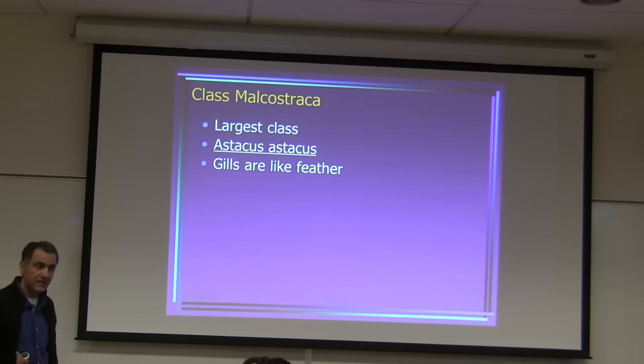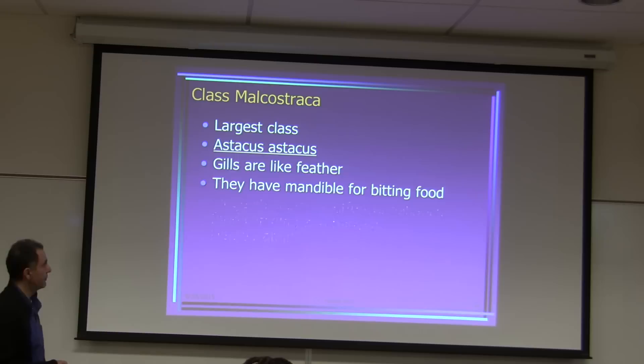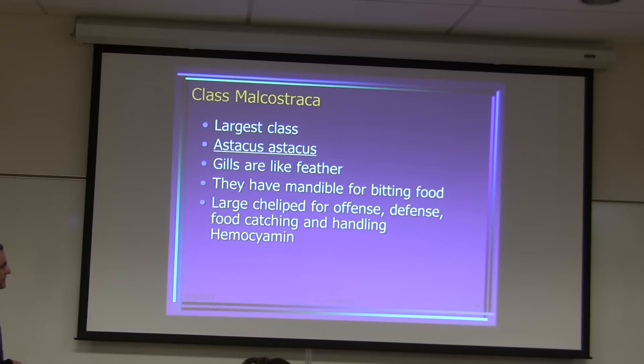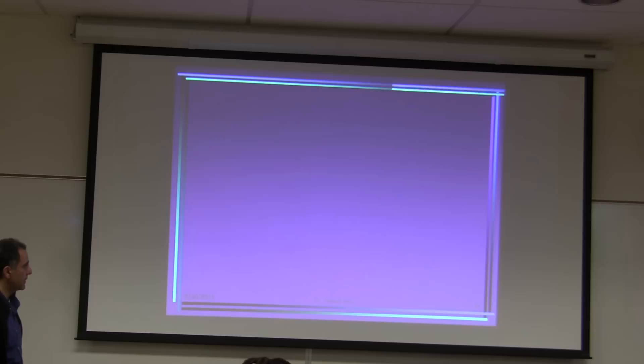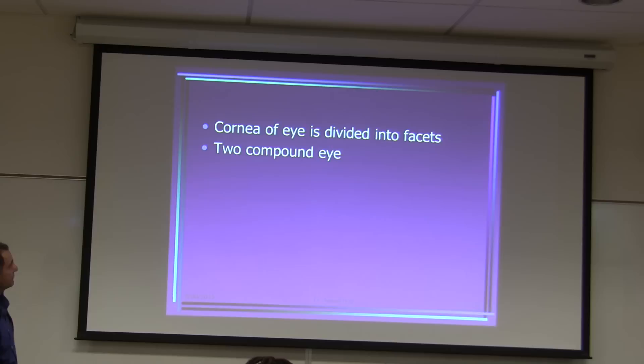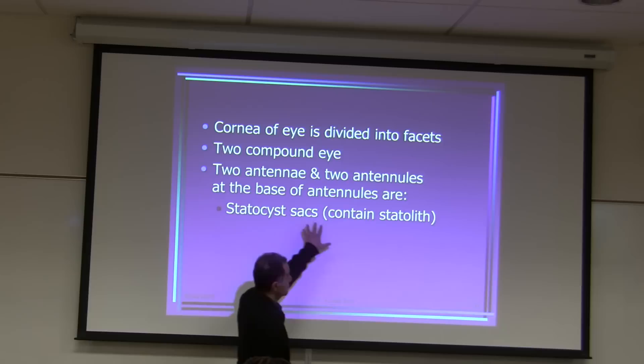The gills are feather-like; after you remove the carapace, you find feather-like structures underneath — those are the gills. They have mandibles for food, and a large chelipede for offense, defense, food-catching, and handling. Hemocyanin means their blood has a copper structure. The stomach has cardiac and pyloric chambers. They have compound eyes divided into facets, plus simple eyes. At the base of their antennae, they have statocysts.